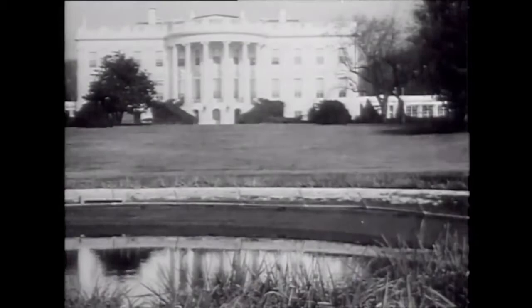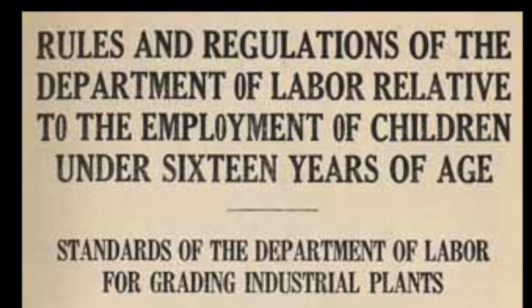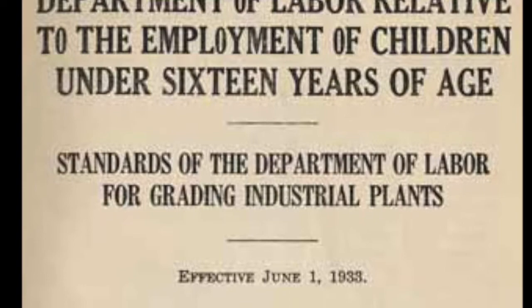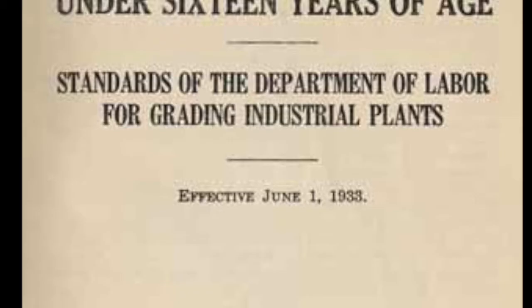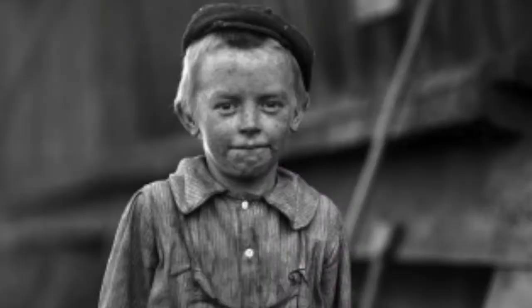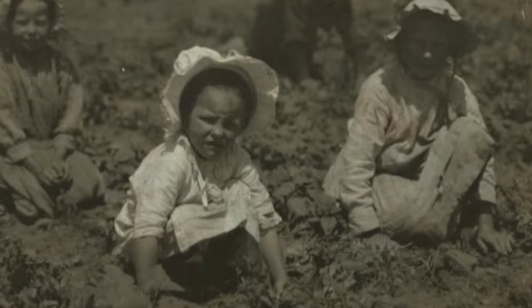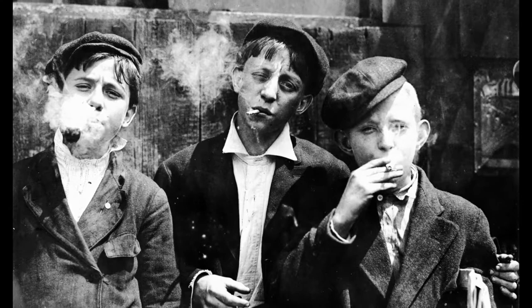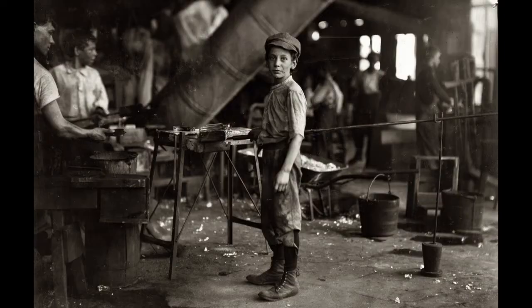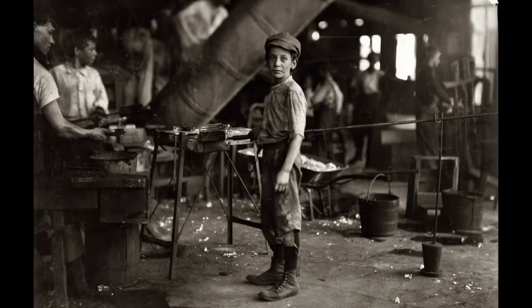In 1916, the United States Congress passed the Keating-Owen Act in response to Hine's photographs. This law established child labor standards including a minimum age of 14 for workers in manufacturing and 16 for workers in mining, a maximum workday of 8 hours, prohibition of night work under the age of 16, and documentary proof of age. This was one of the first legal steps made against child labor, but this law was proved to be unconstitutional, meaning that the government was resistant to the movements made as a result of Hine's photos.